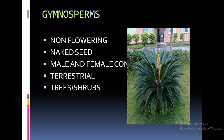Phanerogams are divided into Gymnosperms and Angiosperms. In Gymnosperms, seeds are naked — not covered by a fruit — so they are non-flowering. Male and female cones are present; the male cone produces pollen and the female cone produces ovules for reproduction. These plants are completely terrestrial and exist as trees and shrubs. An example is Cycas.